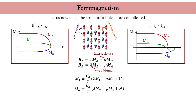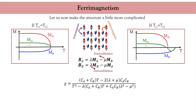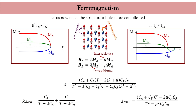This behavior results in a complex magnetic susceptibility with quite rich features that we will not cover in this lecture. When the ferromagnetic interaction dominates over the antiferromagnetic interaction, we obtain a susceptibility that is simply the sum of two Curie-Weiss laws. In contrast, when the antiferromagnetic exchange dominates, we obtain a different behavior that characterizes ferrimagnets such as rare-earth-based compounds.